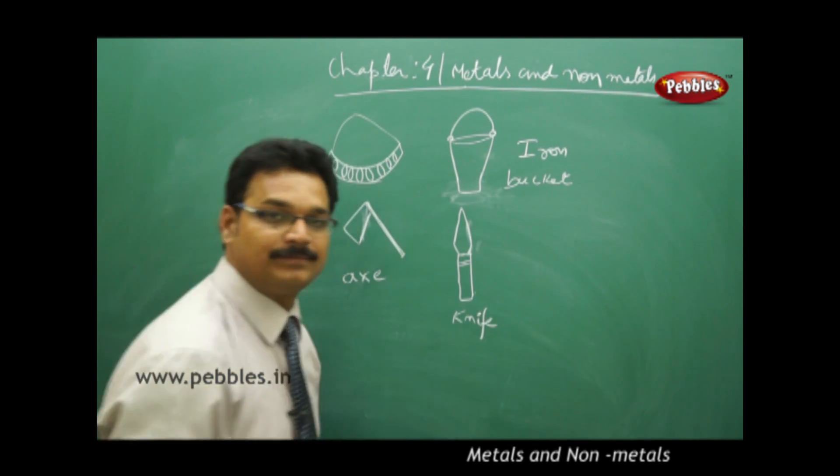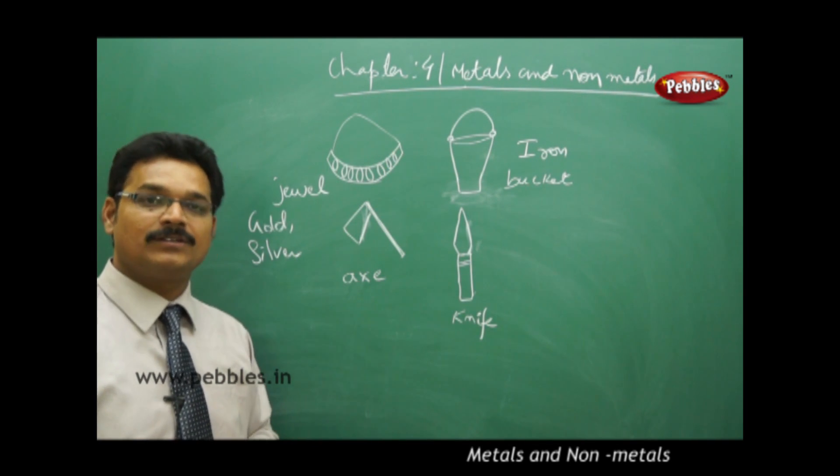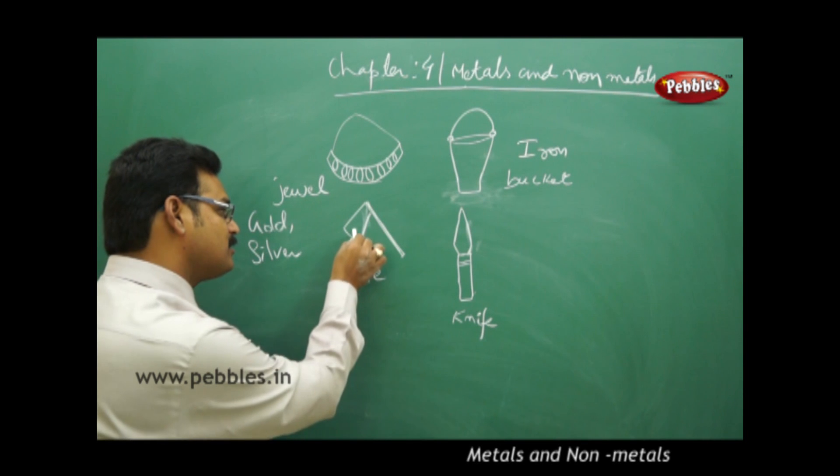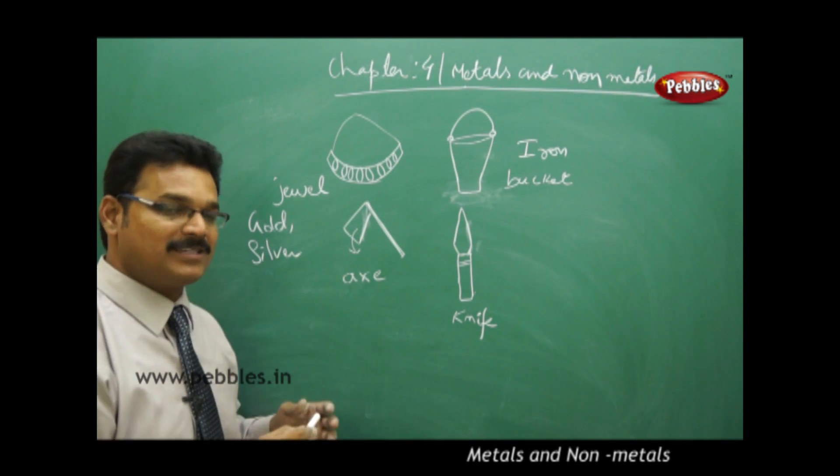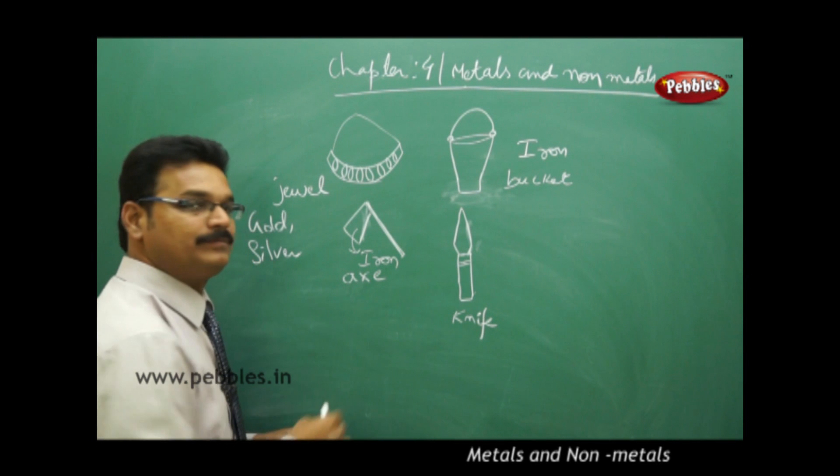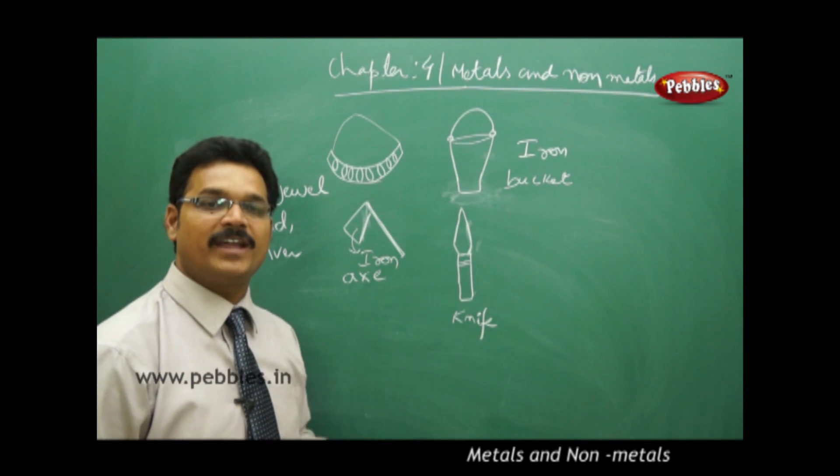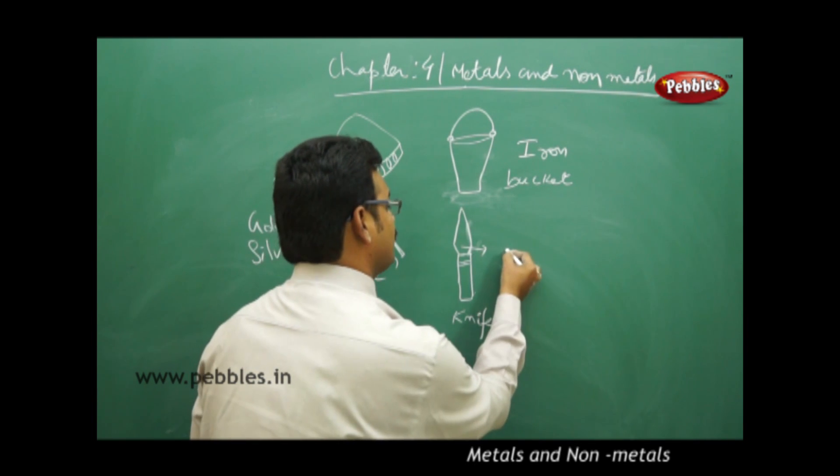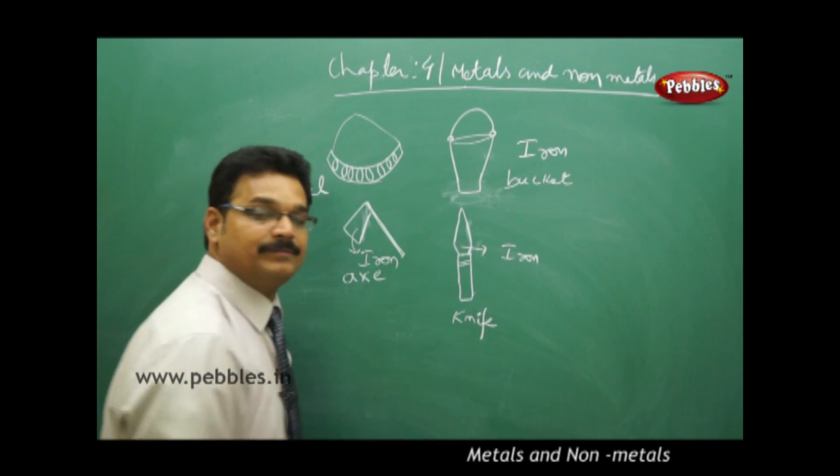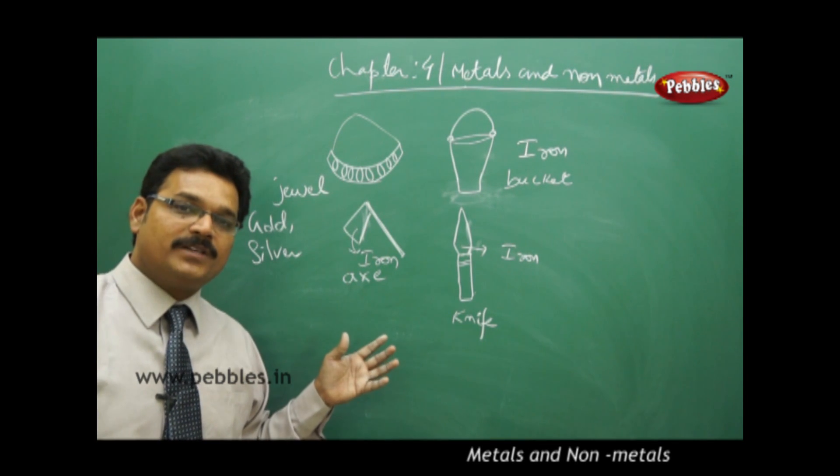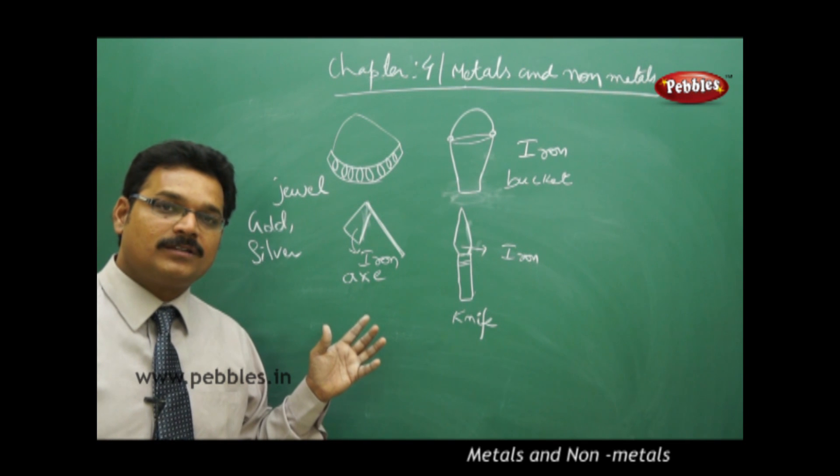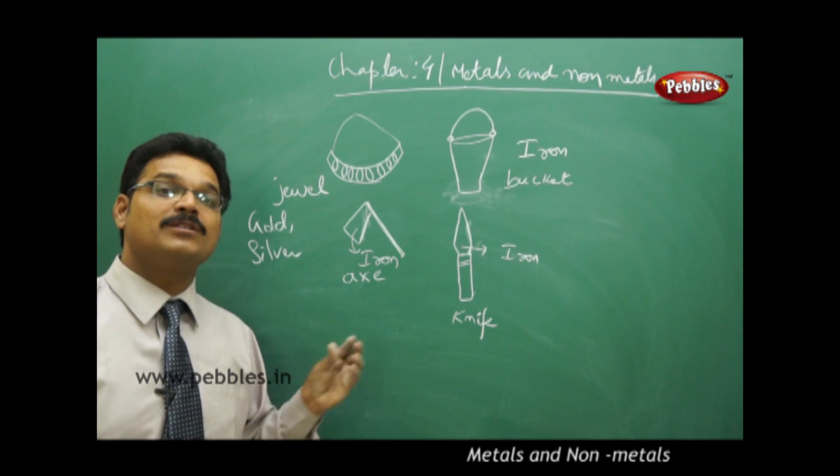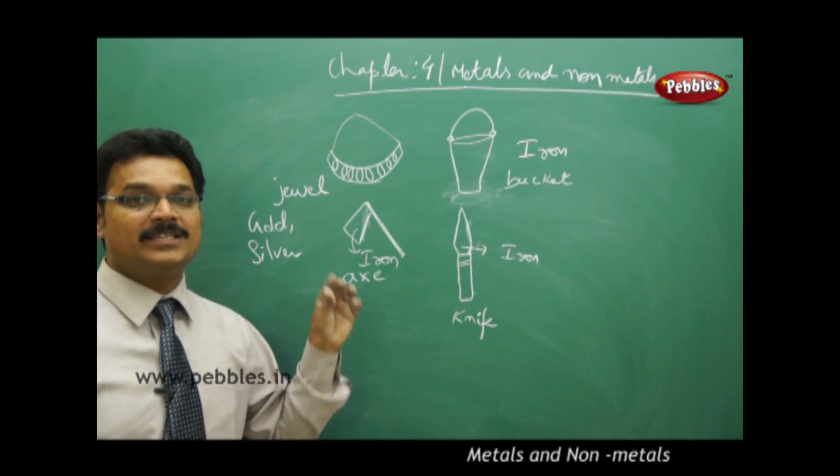You see this axe? This part is made of a metal called iron. And this knife? Also made of different metals like iron. So if you see all these objects, iron, gold, and silver are involved, and all these are metals.